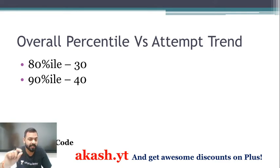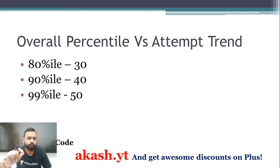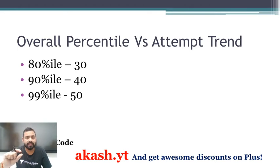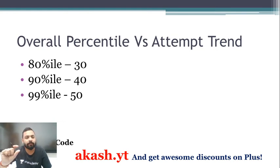In Logical Reasoning, if you attempt 50 or more questions with around 90% accuracy, that puts you in a strong position. Whether your target is 30, 40, or 50 questions attempted, the key is maintaining high accuracy across all sections. These are general trends to guide your approach.